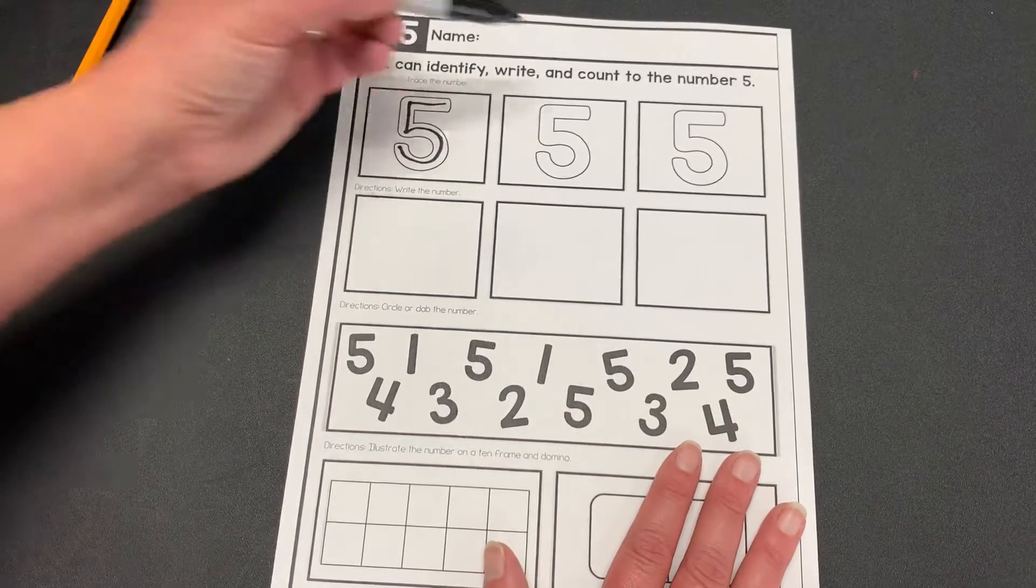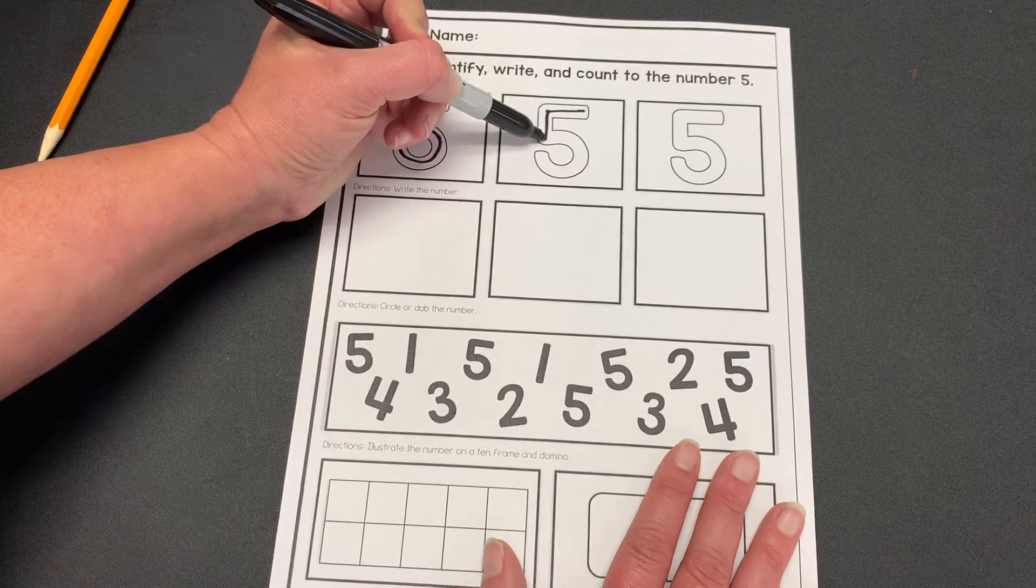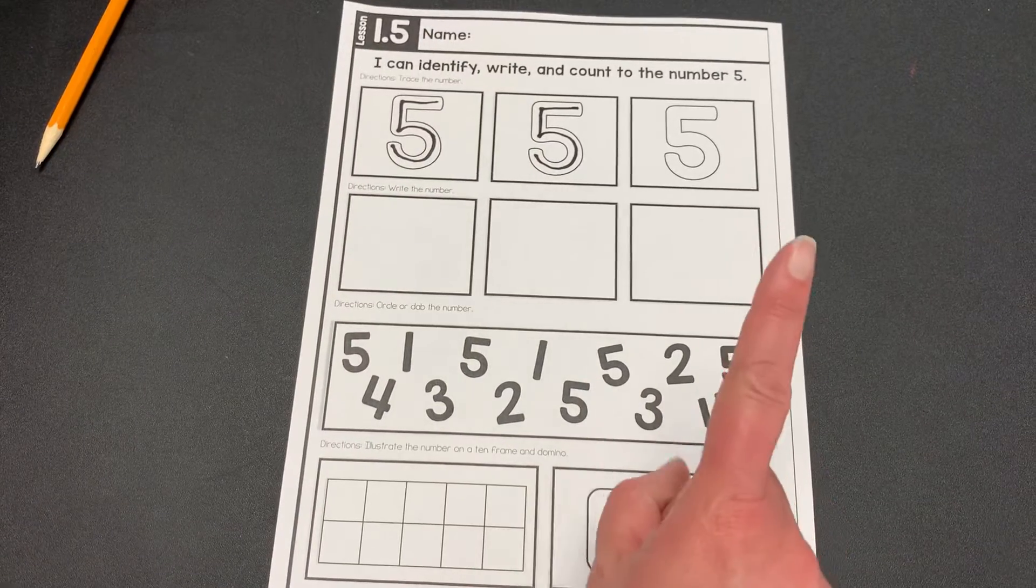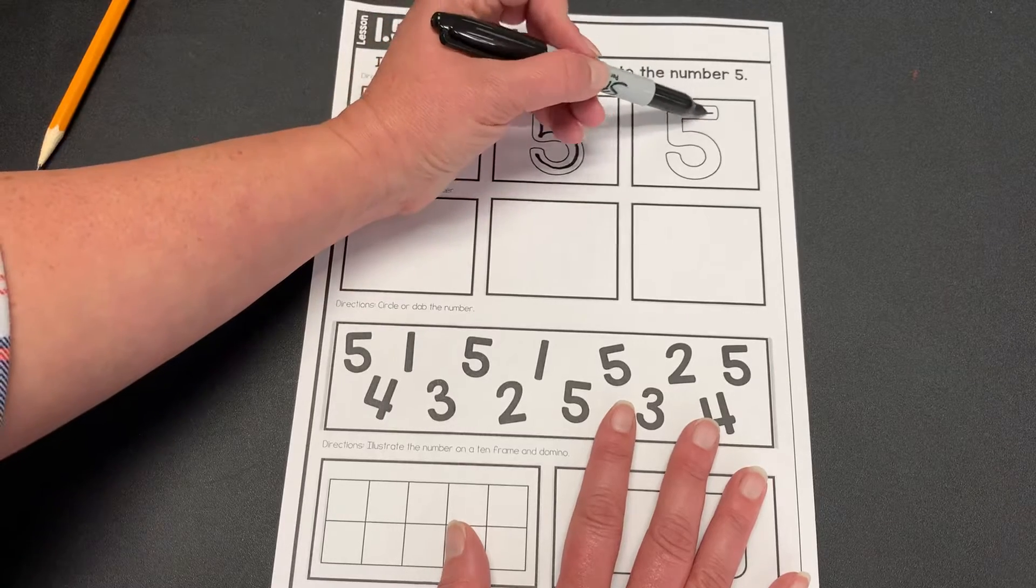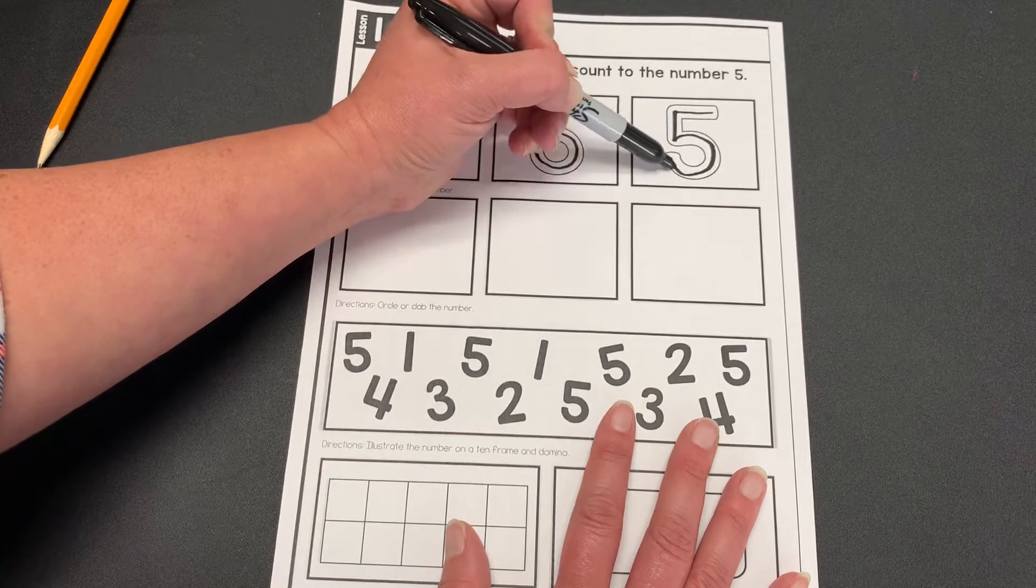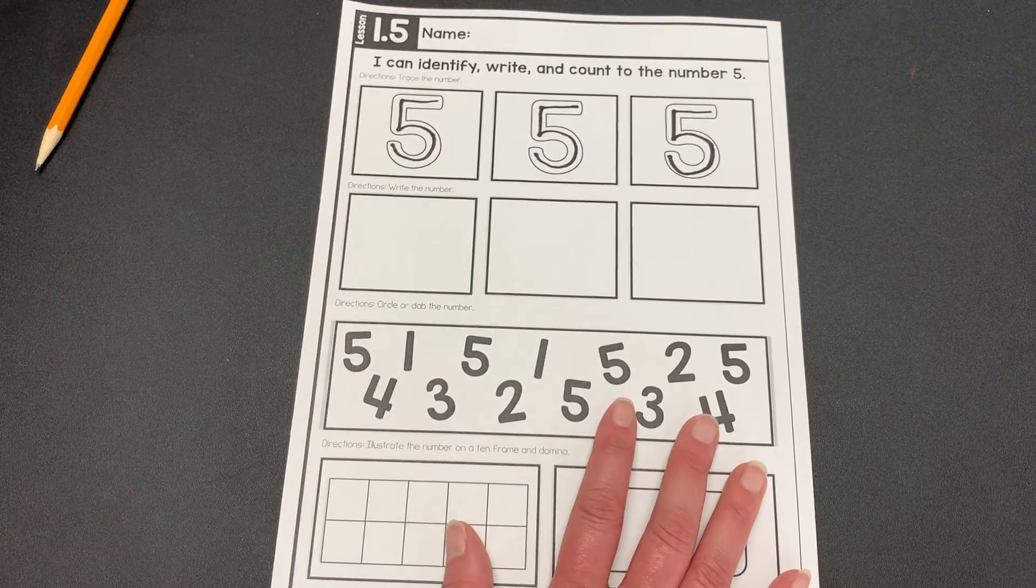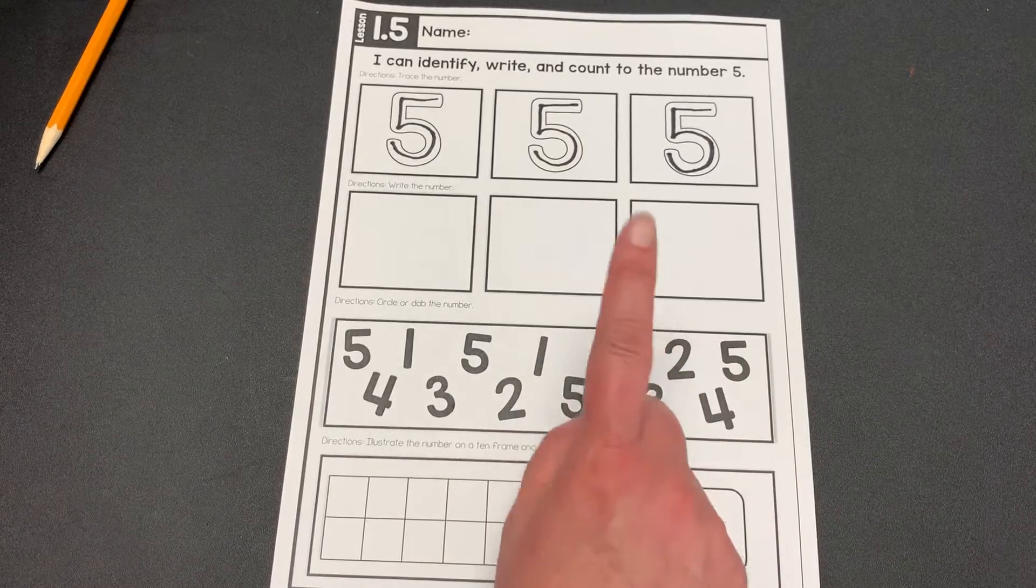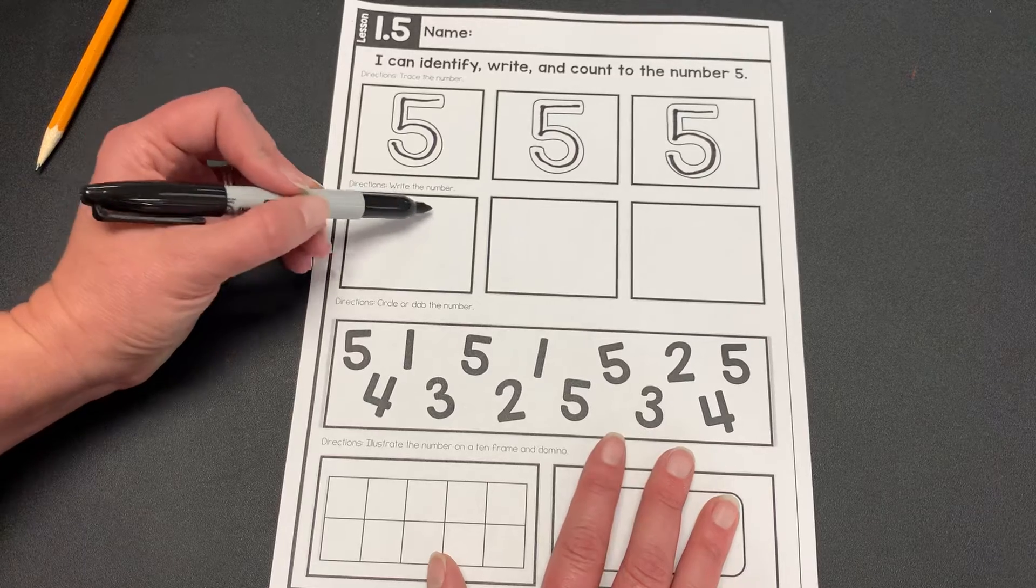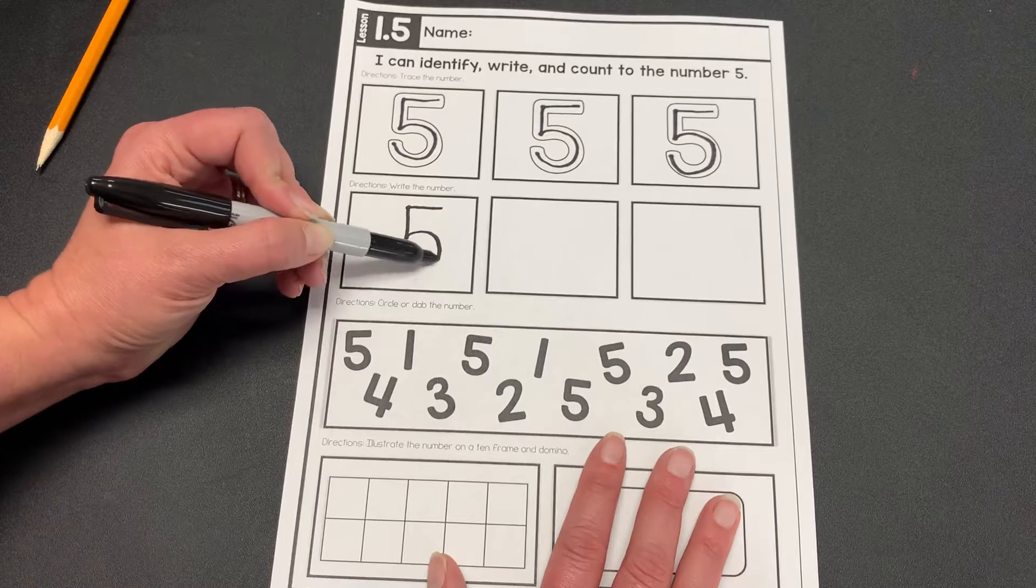So trace it with me. Back, down, curve, around. Now, be really, really careful because sometimes kindergartners can accidentally draw this number backwards. So let's try again. Put your finger up in the air and trace it with me. Back, down, curve, around.